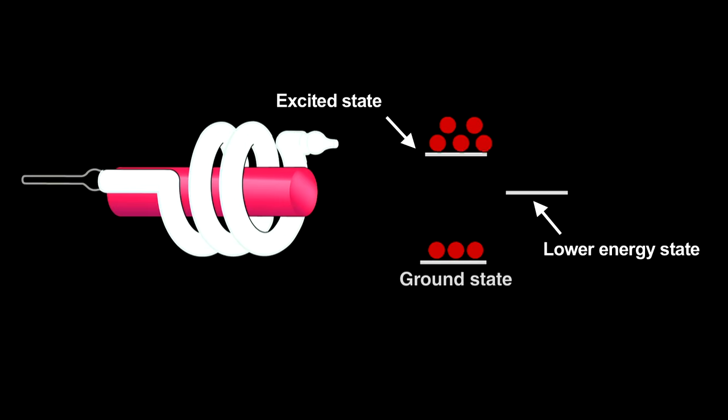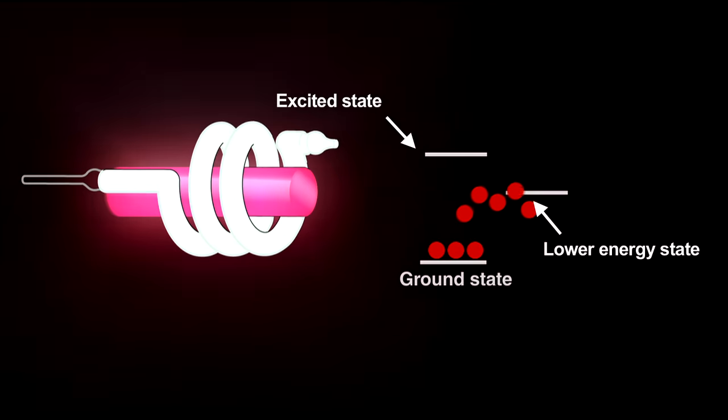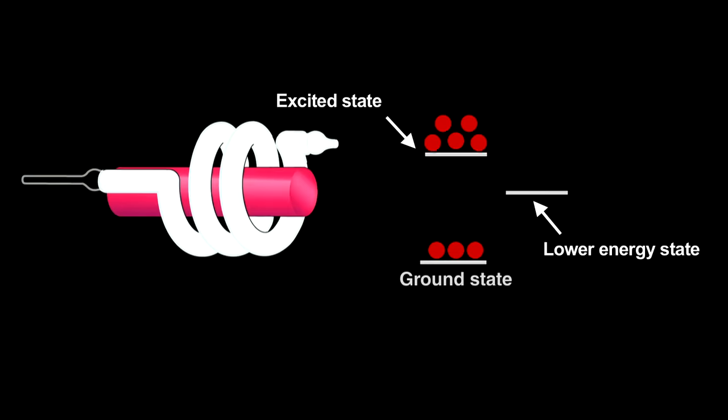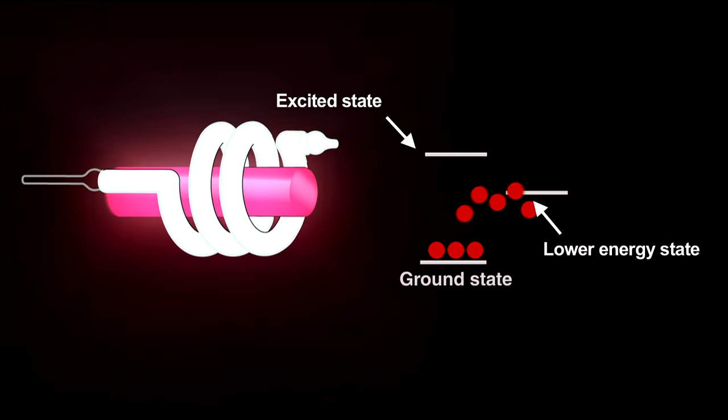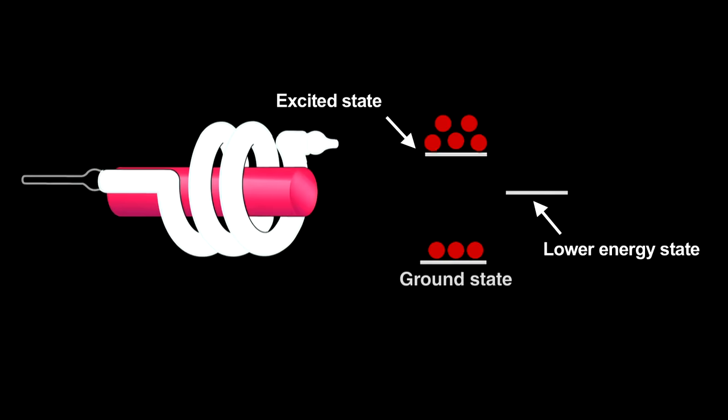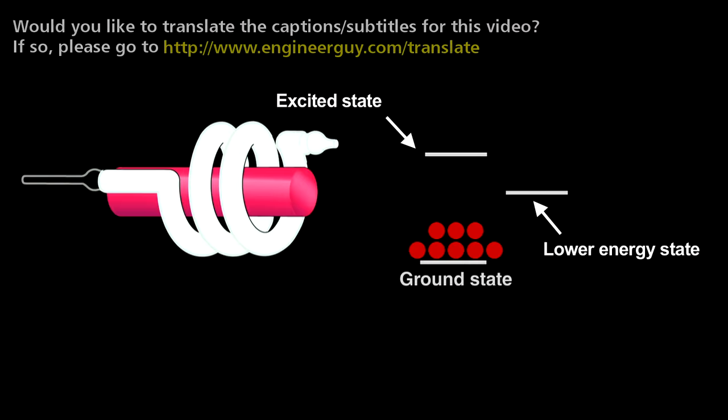Electrons from a population inversion returning to the ground state release light that starts an avalanche called stimulated emission. The photon produced when an electron decays induces other excited electrons to simultaneously decay and release nearly identical photons. That creates coherent light, meaning that the crests and troughs of every light wave in the beam match up.